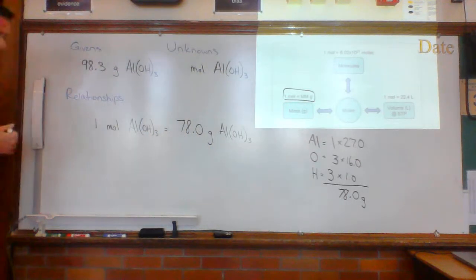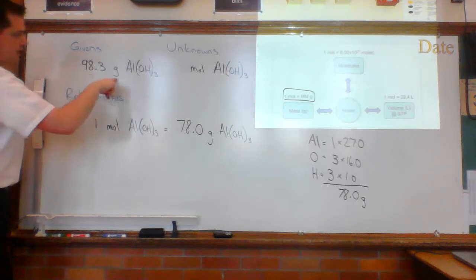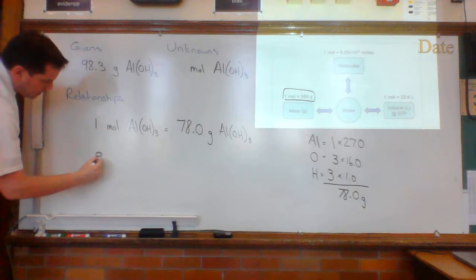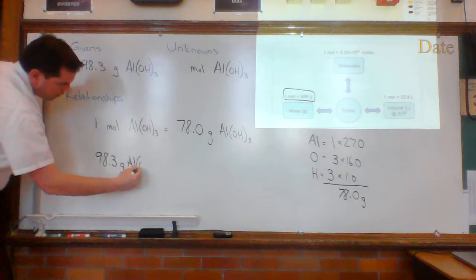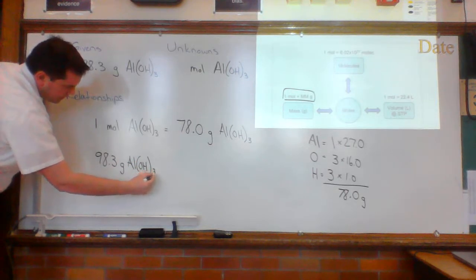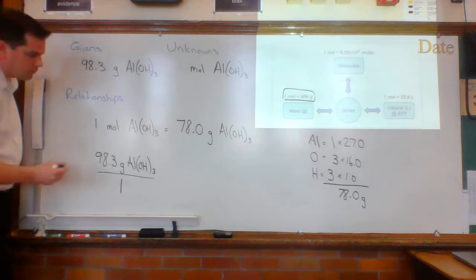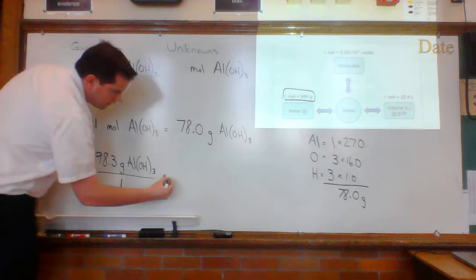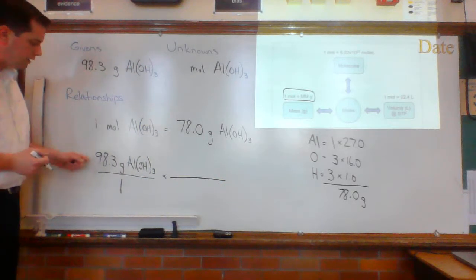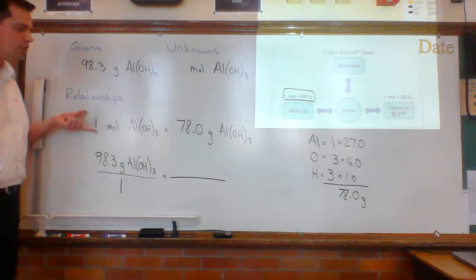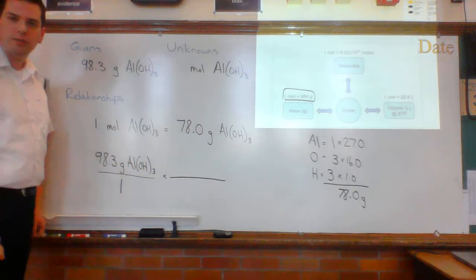So now I can go ahead and I can set up my fractions. My solution is going to look like this. I take my given, 98.3 grams, Al(OH)3. And you can put that over one if you want to turn that into a fraction. Times another fraction. How many fractions do I need? I need one fraction for the given, and I need one fraction for each relationship that I have. This is one relationship, so I'm going to be done after I'm done with this one fraction.